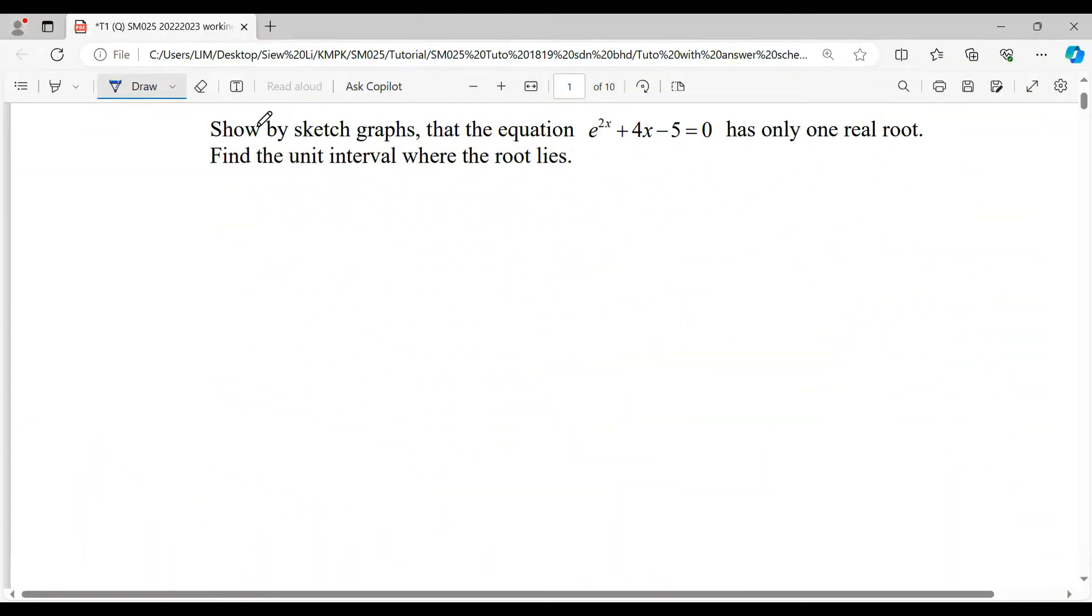Hi everyone. Show by sketch graphs that the equation e^(2x) + 4x - 5 = 0 has only one real root. Find the unit interval where the root lies. Start with the nonlinear equation e^(2x) + 4x - 5 = 0.